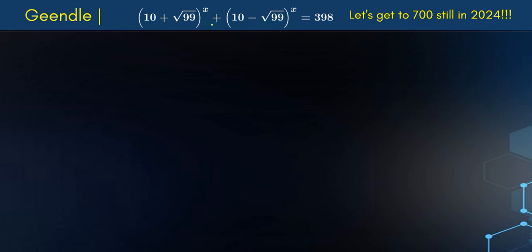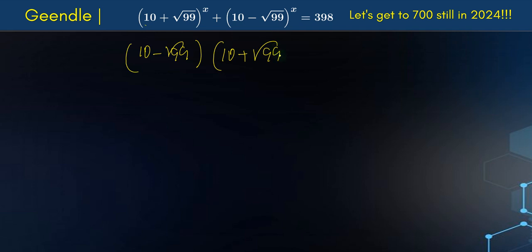If you look at the bases — if I multiply this basis I'm going to get 1, because this is a difference of two squares. So if I multiply (10 − √99) times (10 + √99) I'm going to get 100 − 99, which is 1. So instead of finding the conjugate, which would lead to further simplification, I'm going to multiply both sides of the equation by the first factor. Just a different way to solve this, but I think you're going to like it.